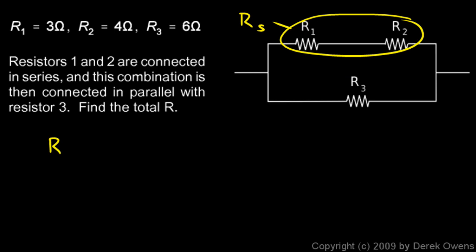So Rs will be really easy to find because resistors in series are pretty easy to add up. The total resistance is just the sum of the two. So I add up R1 plus R2. And you can do that in your head. That's going to be 3 ohms plus 4 ohms. That will be 7 ohms. And then we need to put that in parallel with this. So I have 7 ohms up here. And R3 is 6 ohms down here.